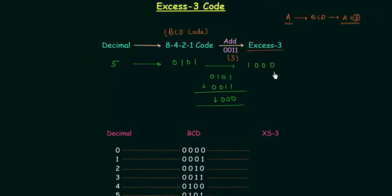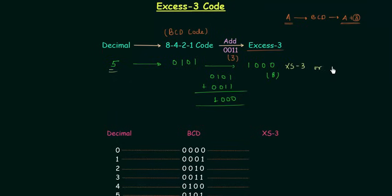And 1000 is 8. So initially we were having 5 and now we have 8 — 5 plus 3 is 8. So 1000 is XS3 code for 5. We also represent XS3 code as XS3 or X3. These two are the abbreviations for XS3 code.